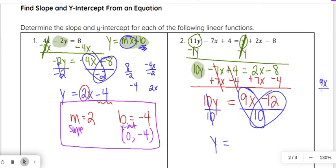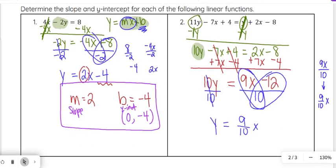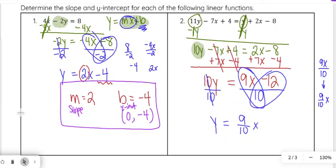9x divided by 10, 9 and 10 are not divisible by the same number, so we can't simplify any further, so we're just going to leave it 9/10x. Technically you could leave the x on top of the fraction, but most times it is written after. That way, when we get to finding the slope, it's easier to just figure out what number is in front of that x.